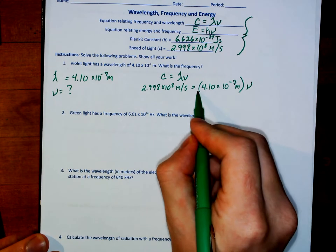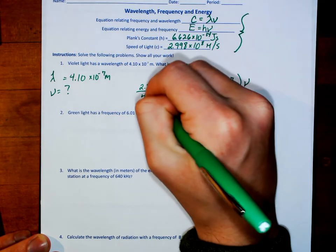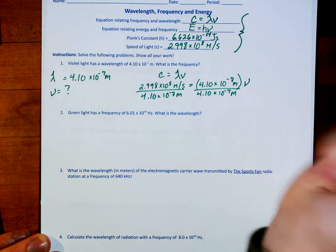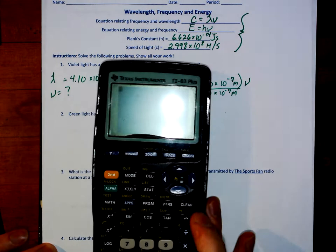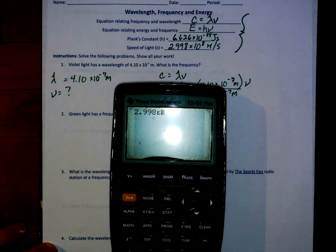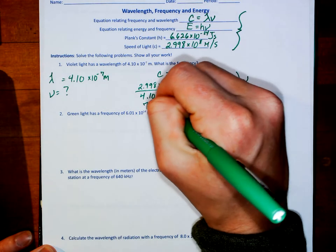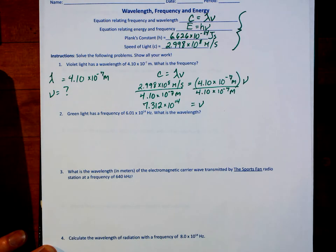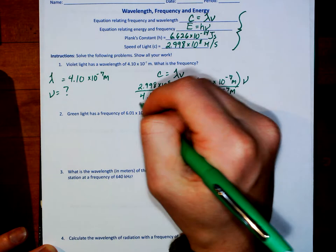To solve that equation, I am going to divide by that number on both sides to get the frequency by itself. Remember that when you are putting these into the calculator, you must use that E button. So I'm going to put that into the calculator as 2.998 E8 divided by 4.1 E negative 7, giving me an answer of 7.312 times 10 to the 14th. I'm looking for a frequency, so it should come out in hertz — my meters cancel, leaving per second or hertz. And that is my answer.